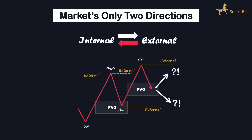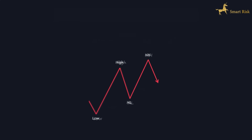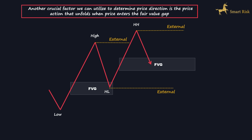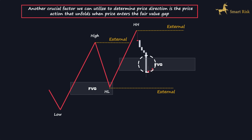The question arises: will the price move towards upper or lower external liquidity? To answer this, you should first consider the previous order flow of price on the higher time frame, or the order flow within the same time frame. For example, if you zoom out and see that price was predominantly in a downtrend, you would anticipate a downward break of structure, and price is more likely to continue downward to sweep the lower external liquidity. Conversely, if the price was in an uptrend, the expectation would be that price will rise to target the upper external liquidity. Another crucial factor is the price action that unfolds when price enters the fair value gap. If price respects the fair value gap and demonstrates a robust rejection towards the upside, it suggests price will likely aim to reach the upper external liquidity. Conversely, if the price does not exhibit a significant reaction upon reaching the fair value gap, it indicates that price is more likely to move downward to target the external liquidity accumulated below the low.